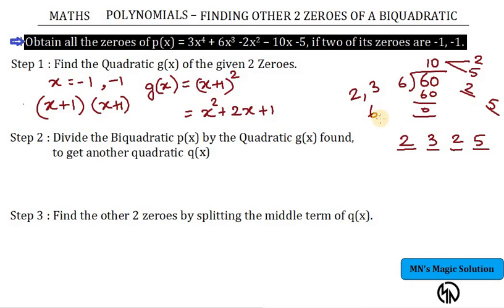Step 2: Just like 6 divides 60, divide the biquartic. Given 3x⁴ + 6x³ - 2x² - 10x - 5, this particular entire equation you have to divide by g(x). So p(x) I have to divide by g(x), and the quotient that I get is q(x). Use long division method. In the biquartic divide by the quadratic, I will get another quadratic. This quadratic can be found by long division method.